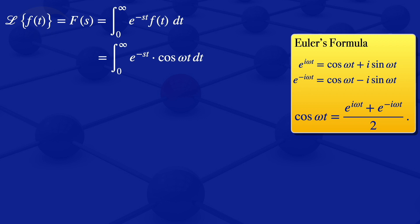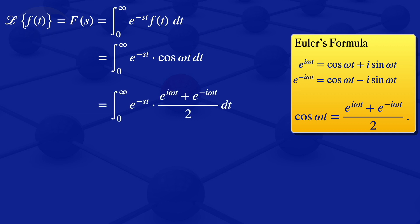With the expression for cosine of omega t just obtained, we substitute it into the integral and get the integral from 0 to infinity of e to the minus s t times the quantity e to the i omega t plus e to the minus i omega t, divided by 2, dt. We factor out the half and use laws of exponents to combine the exponents, obtaining one half times the integral from 0 to infinity of e to the minus s minus i omega t plus e to the minus s plus i omega t, dt.